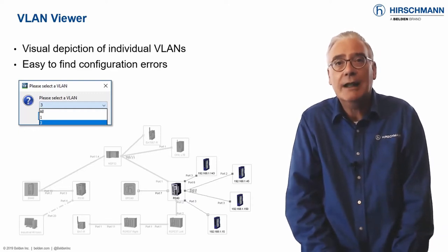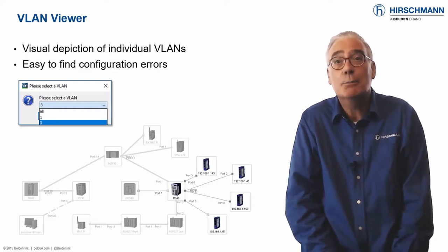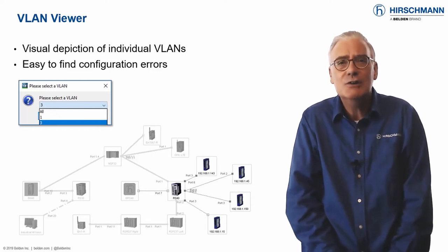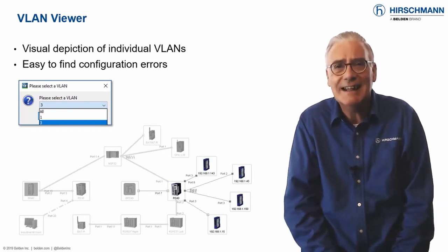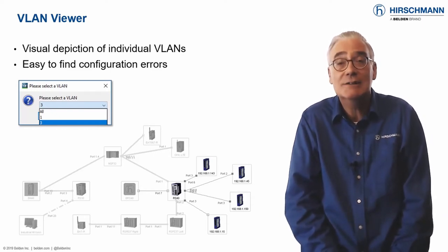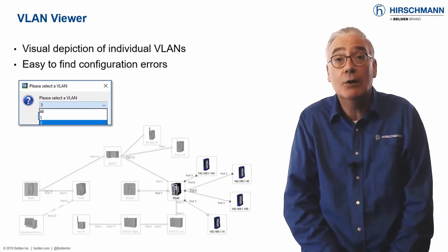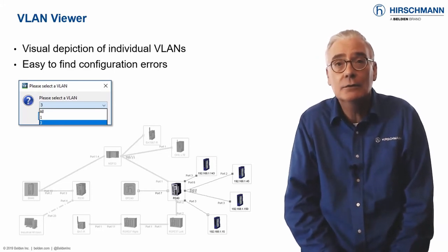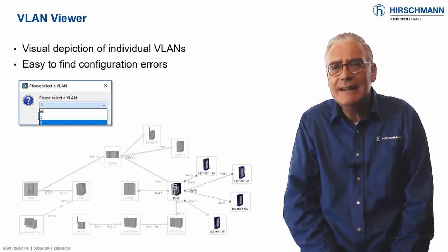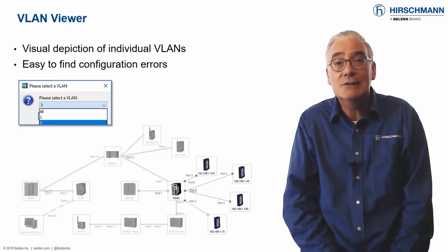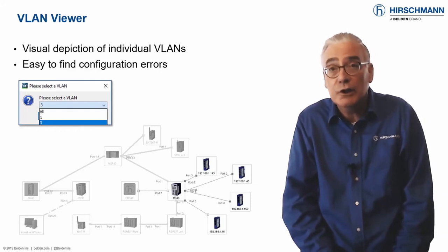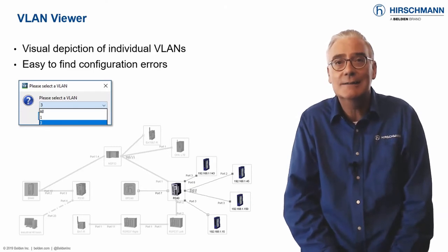Industrial HiVision can display a topology map per VLAN. This shows precisely which switches, connections, and end devices are members of a VLAN. Configuration errors are immediately obvious. If you use VLANs on your network, you need a tool like this.